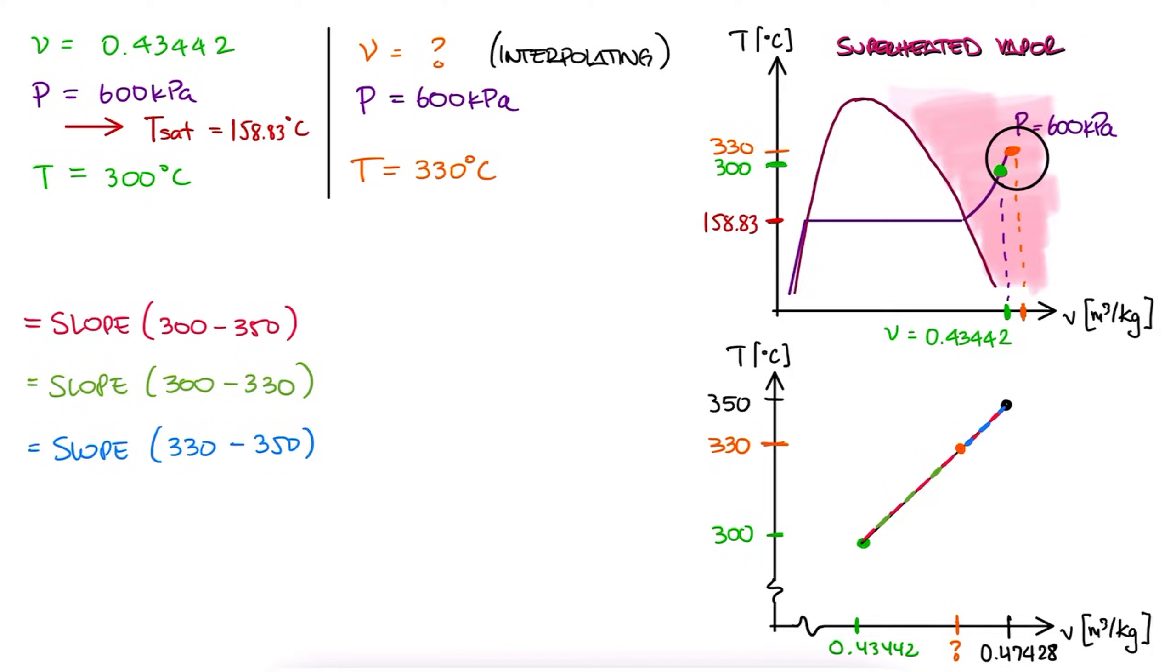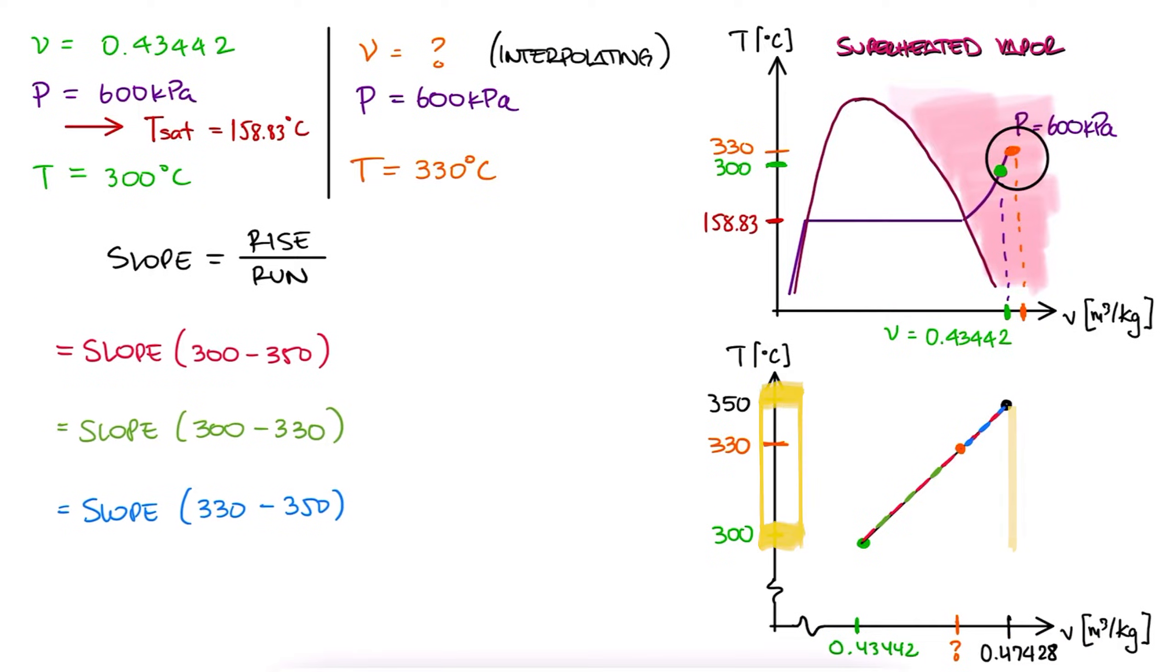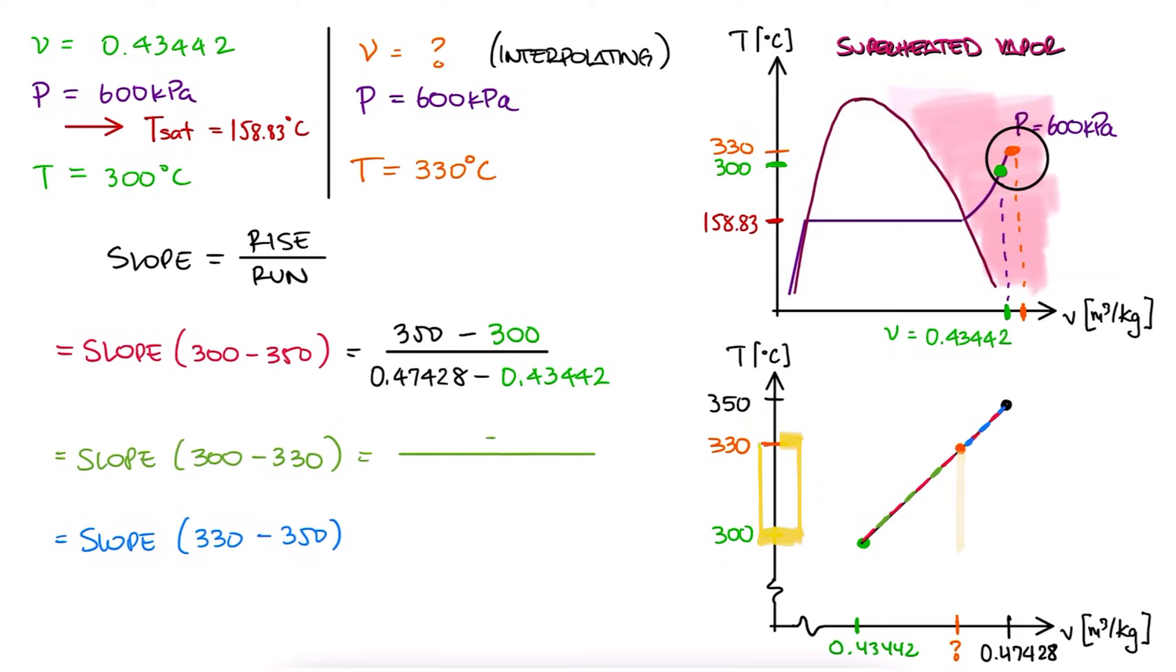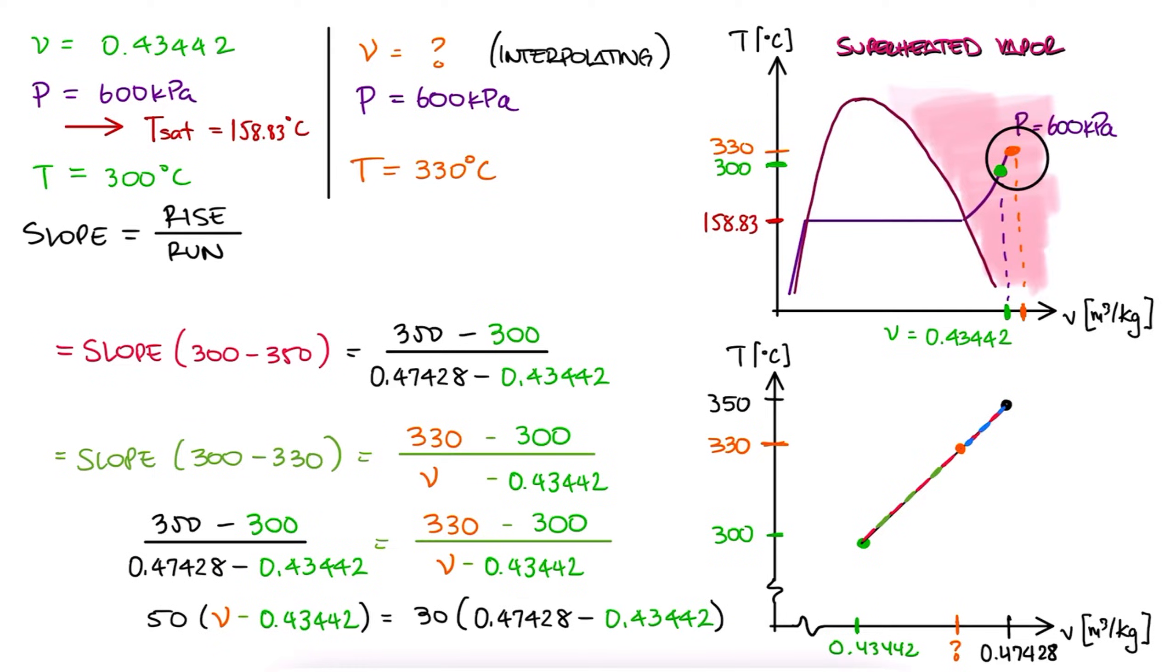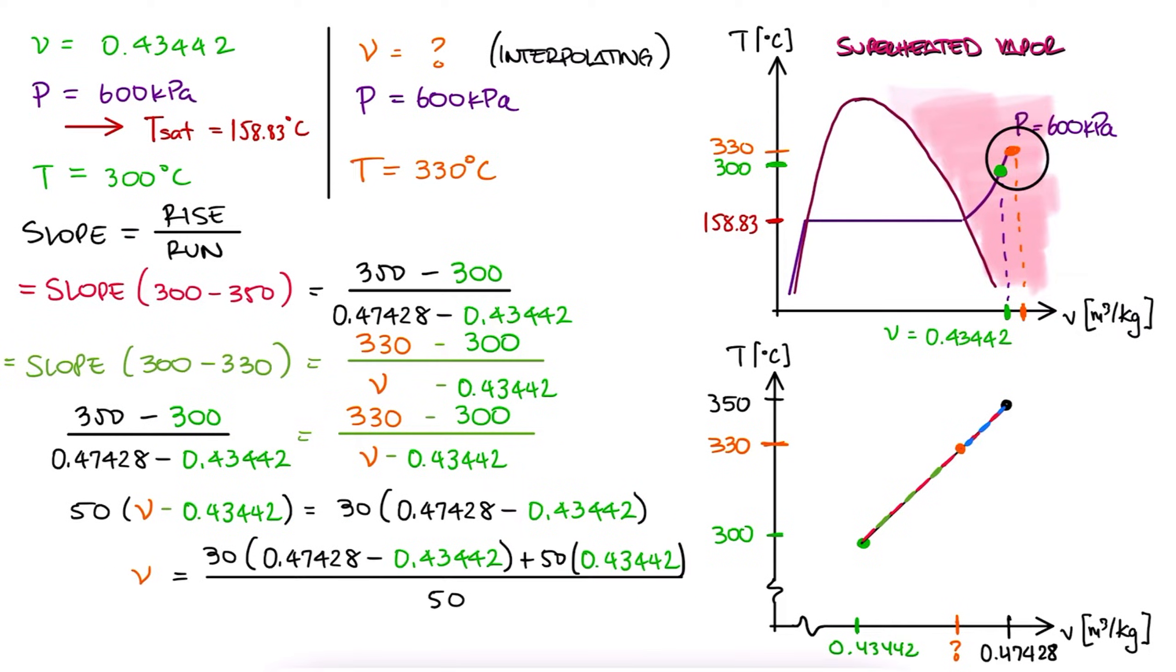Since we have the values for V for 300 and 350, we'll definitely use those for one of the slopes, rise over run, or 350 minus 300 over 0.47 minus 0.43. And we use any of the remaining two, green or blue. Rise would be 330 minus 300, and run would be the V we're looking for, minus 0.43. We equate these two slopes and we solve for V. This would be the specific volume for 600 kilopascals and 330 degrees Celsius.